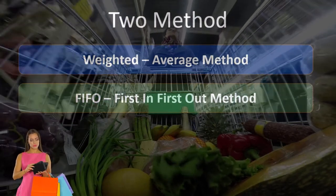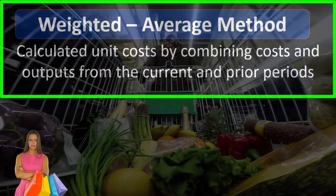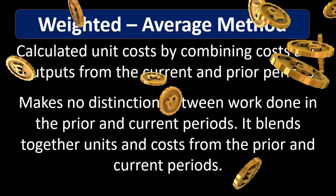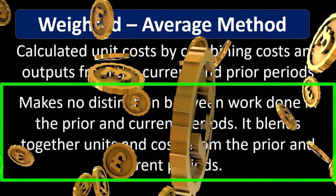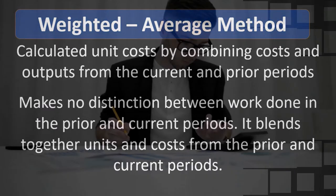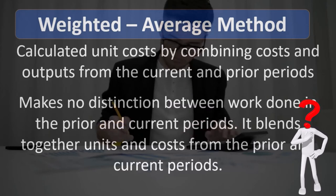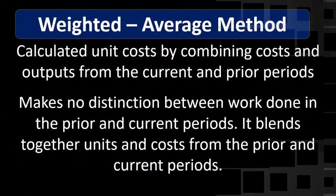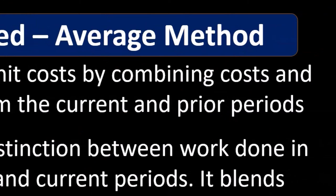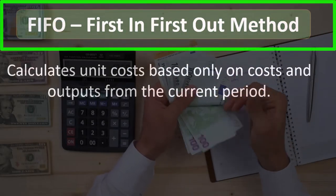The weighted average method calculates unit cost by combining costs and outputs from the current and prior periods. It makes no distinction between work done in the prior and current periods — it blends together the units and costs from both. This blending or averaging process is generally acceptable to use. Because it does not make a distinct cutoff between the work of the prior period and the current period, the weighted average method is often a little easier, if not quite as precise.